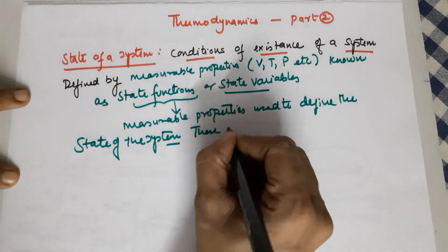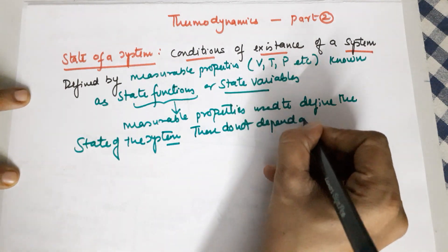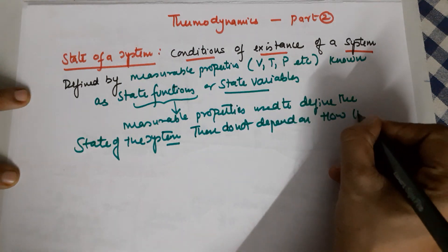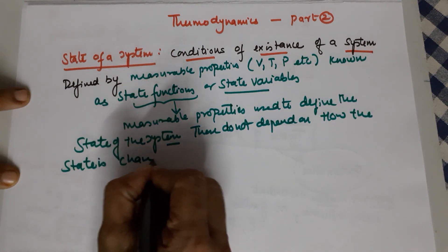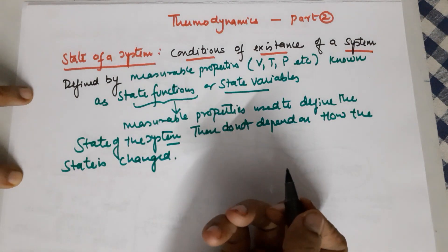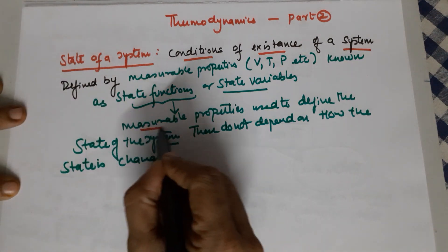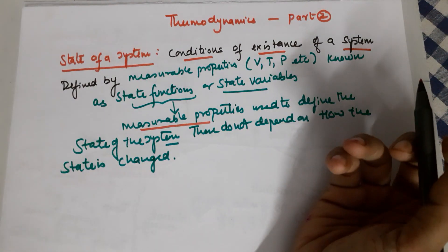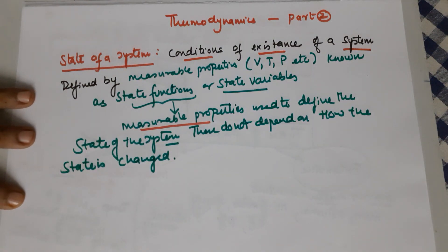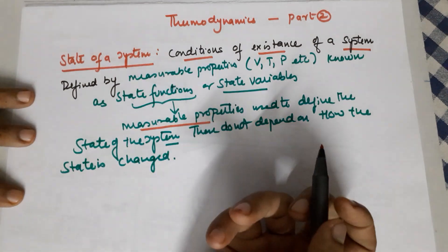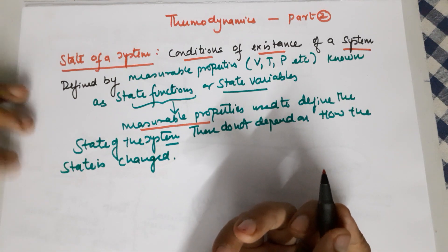These properties do not depend on how the state is achieved or changed — how you achieved that change is not important. So state variables are defined as the measurable properties — temperature, pressure, volume, density, etc. — which are used to define the state of a system. Any state of the system needs to be defined, and for that you require properties known as state variables.